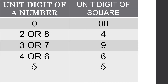For finding the square root by long division method you have to remember this table. When the square of a number has an even number of zeros, the unit digit will be 0. When the unit digit of a square number is 4, you can try with 2 or 8. When it is 9, try with 3 or 7. When it is 6, try with 4 or 6. When it is 5, try with 5. Always remember this table whenever you do the square root by long division method.